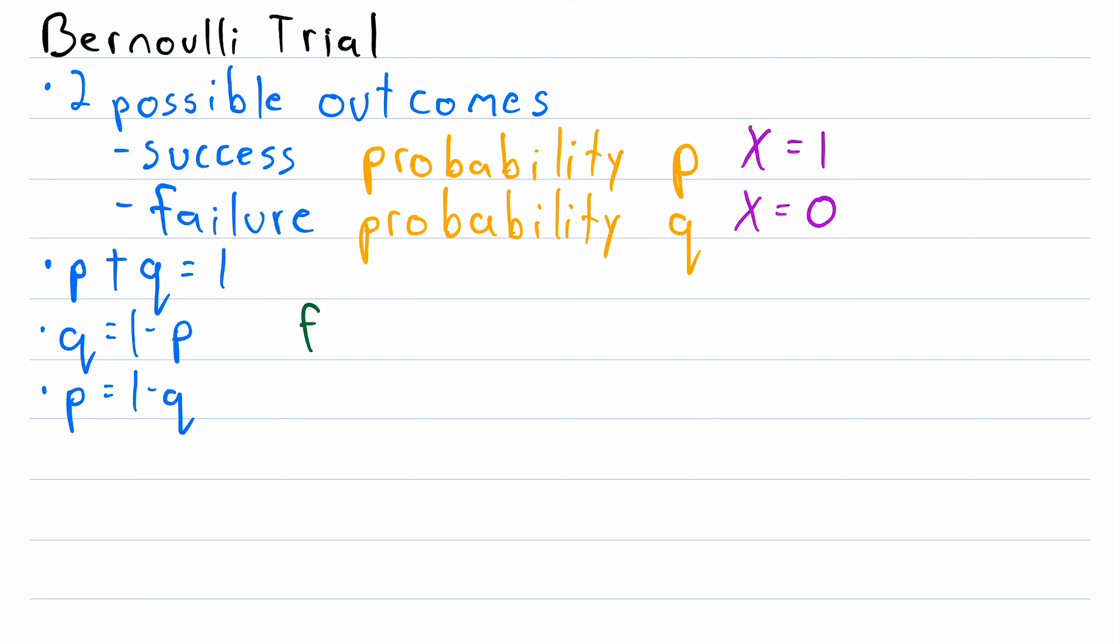So what are some examples of Bernoulli trials? Well, an easy one is flipping a coin, we could say that success is the coin landing heads up. So we'll write success is heads. And we could say that failure is the coin landing tails up. And in this case, the probability p of success is equal to one half. And the probability q of failure is also equal to one half.